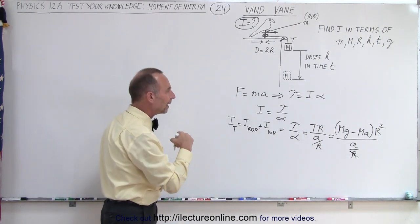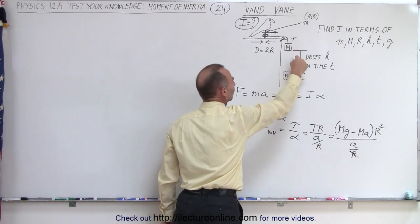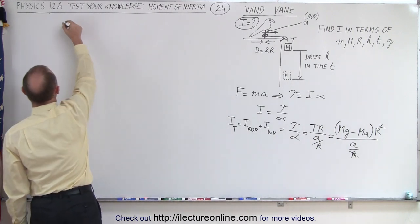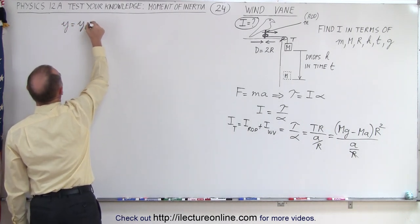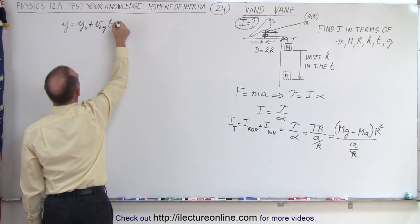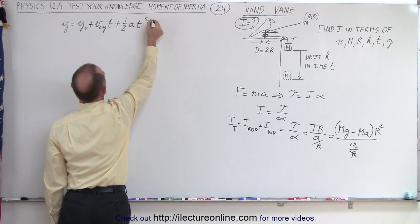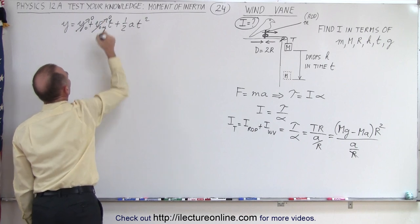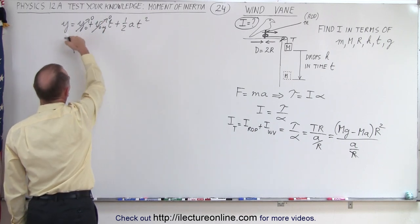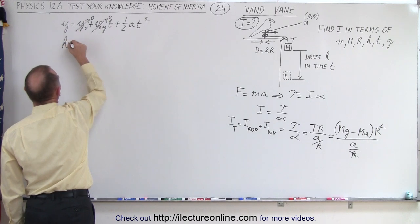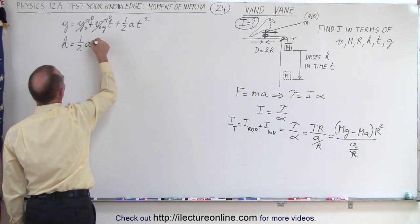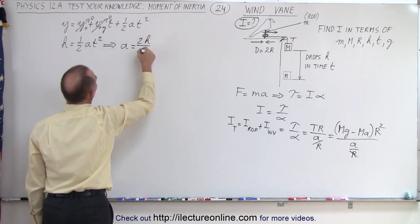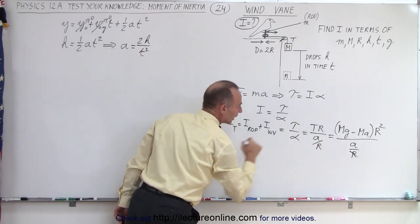Now we need to know the acceleration, but we know that it dropped distance h in time t, so we can use kinematics to find that. We can say y equals y-naught plus v-naught-y times t plus one-half a t squared. Those first two terms are zero because there's no initial height and no initial velocity. So h equals one-half a t squared, which means acceleration equals 2h divided by t squared.